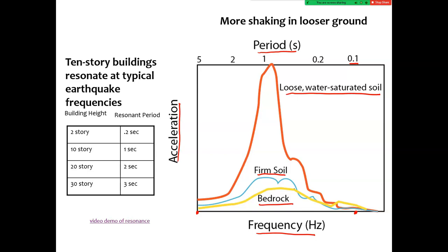Bedrock is generally the safest material to build on — it actually experiences the least acceleration for a given type of wave. Firm soil is worse than bedrock, but still much better than building on loose and water-saturated soil, which can shake maybe 10 times more in some cases than bedrock does. Building on loose water-saturated soil is a bad idea. After the 1906 earthquake destroyed half the city, what do you think they did with the rubble? They took that rubble and dumped it into the bay and made some new land, and now there are buildings built on it. Those are the places you really do not want to be if a big earthquake hits San Francisco.